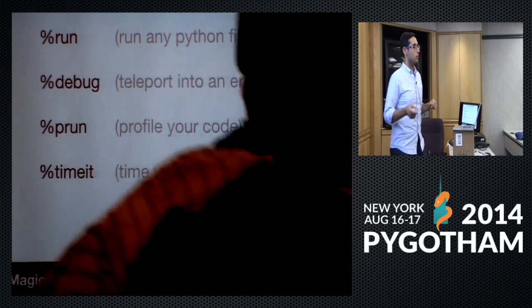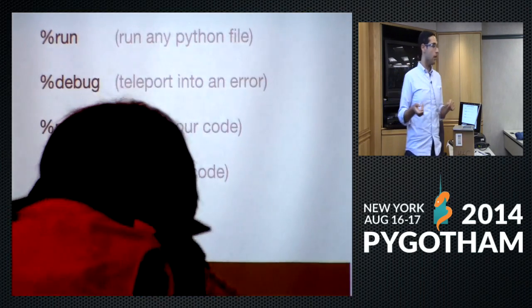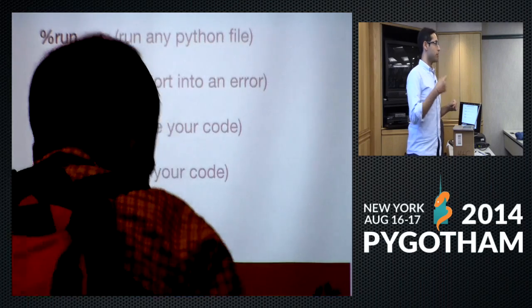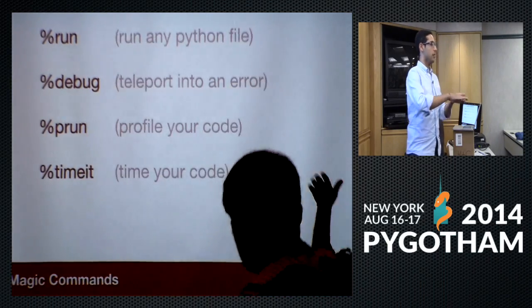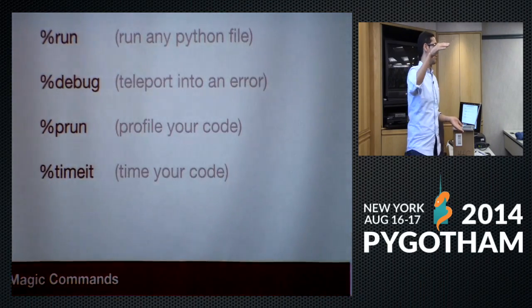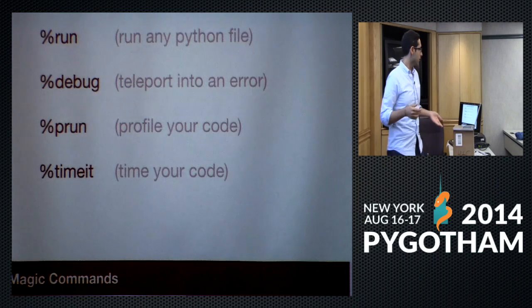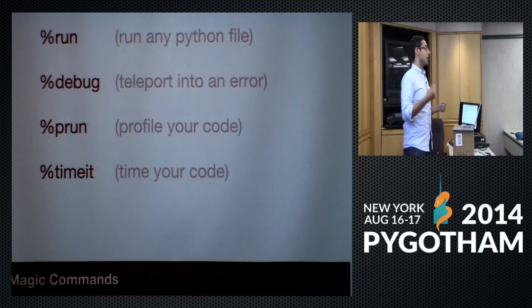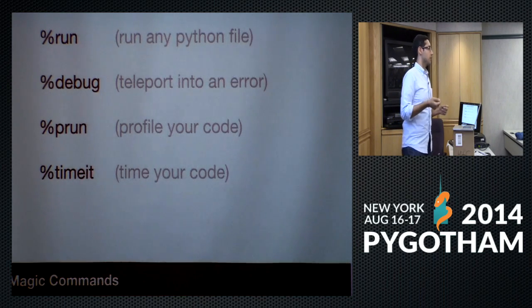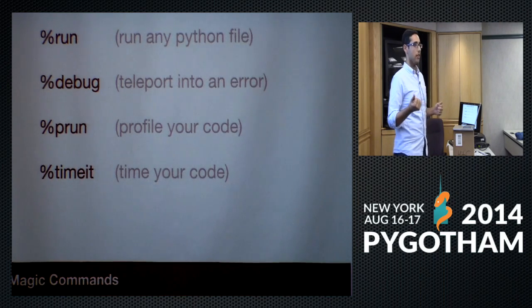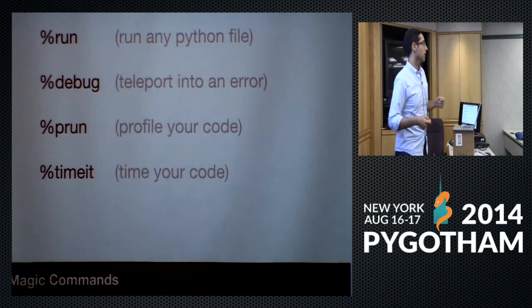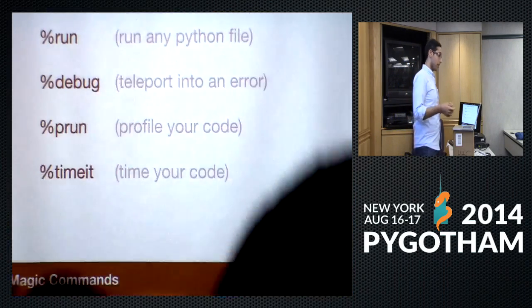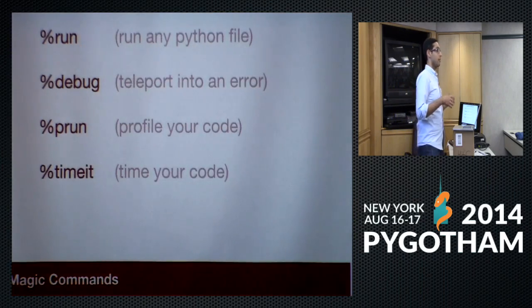Another magic command is `prun`, which will profile your code. Anything after prun will run normally and you'll get profiler statements as if using cProfile automatically. The last one is `timeit`, which runs your code a number of times and tells you how long it took. These are all very convenient for getting feedback fast.